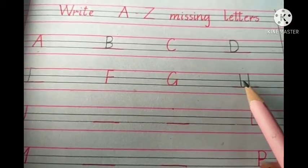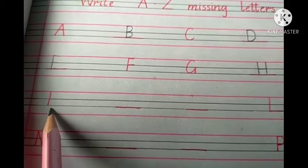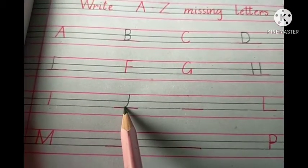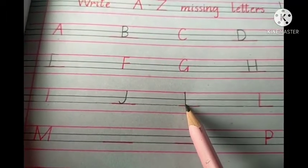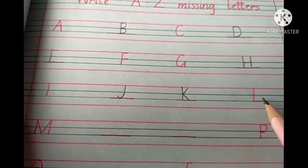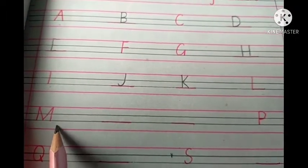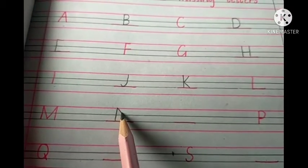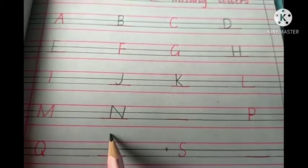How to write H? Like this. What comes after H? I. What comes after I? J. Straight line and curve. What comes after J? K. Straight line and make a slanting line. K. What comes after K? L. What comes after L? M. What comes after M? N. Straight line, slanting line, then make one more straight line. N.